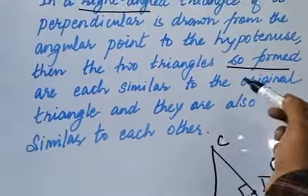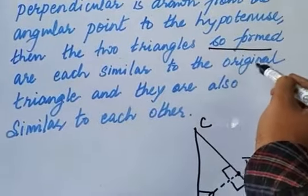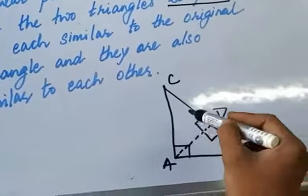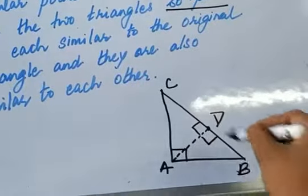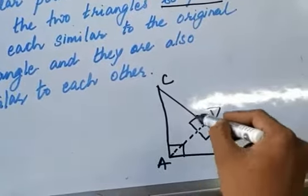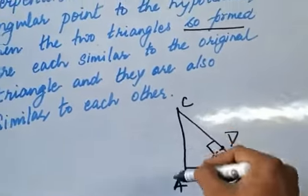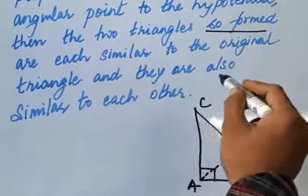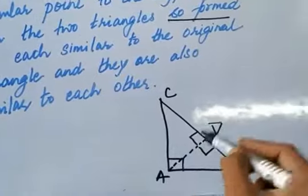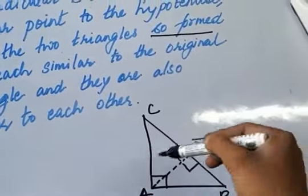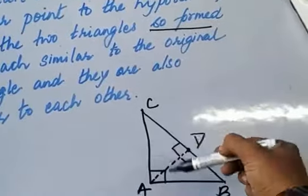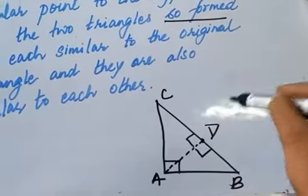So these two triangles are similar to the original triangle. Means this small triangle is similar to the original one, the larger one. This smaller one is also similar to the larger one, the original triangle. And they are also similar to each other. So we have three triangles. More or less what we are going to prove is all the three triangles are similar to each other.